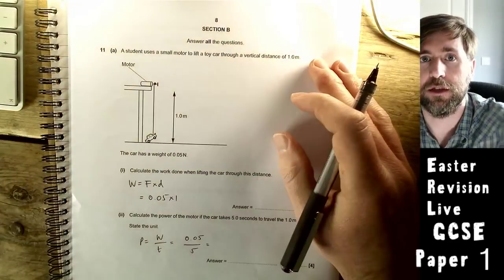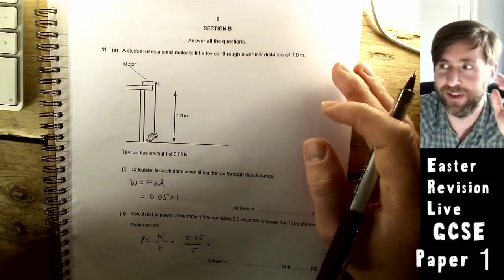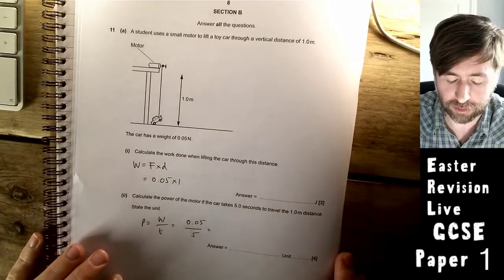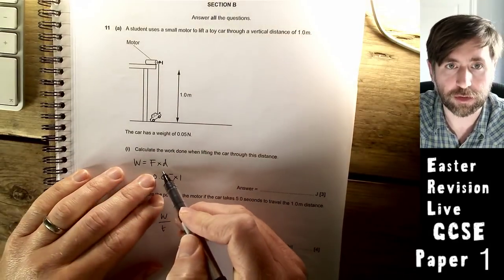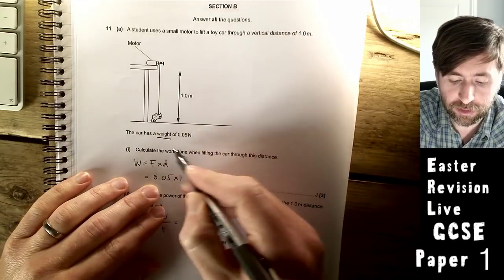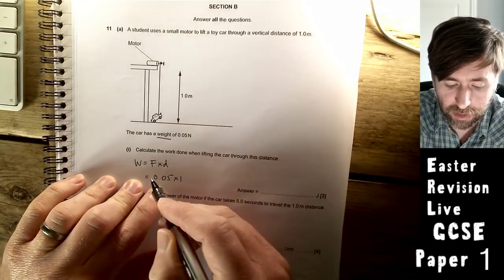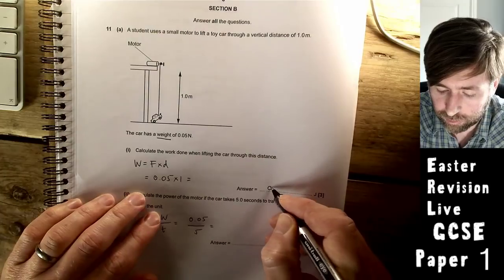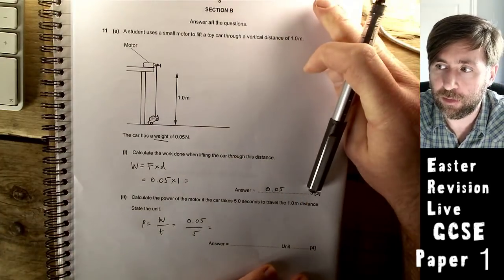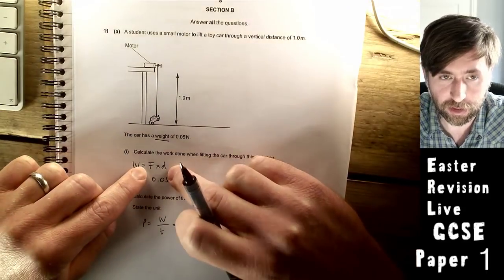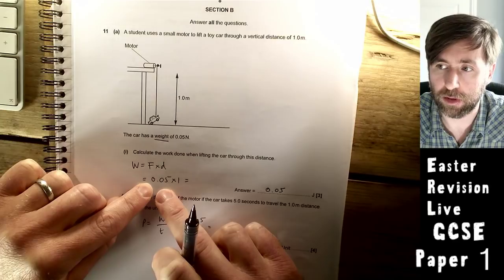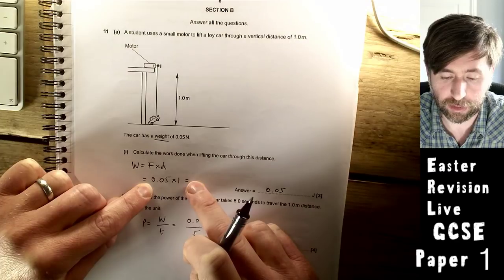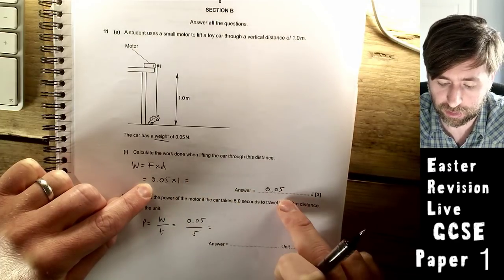A student uses a small motor to lift a toy car. You have to calculate the work done. This is recall of your equation. Work done is force times distance. You're told the car has a weight, so you need to recognize that weight is the force. Work done is 0.05 times one, which is 0.05. The first mark is for recall of the equation, the second for inputting the data in the right place, and the third for doing the calculation.